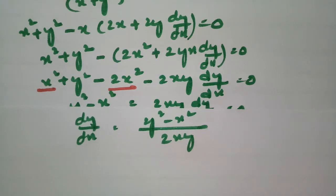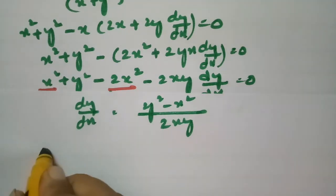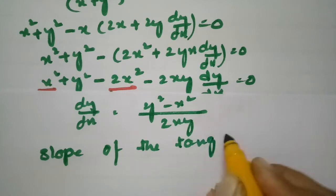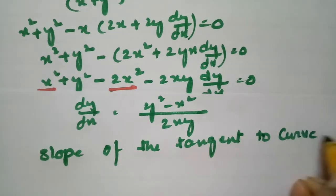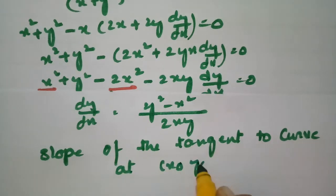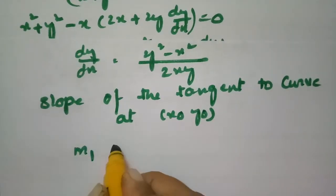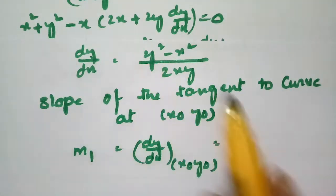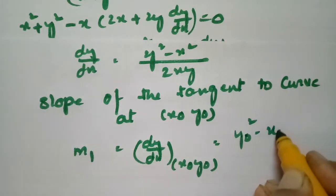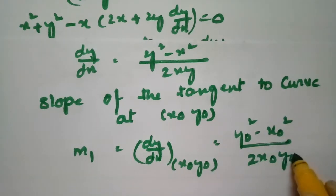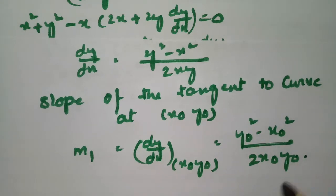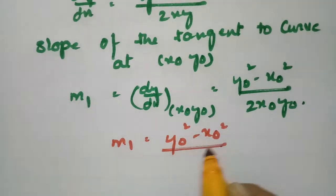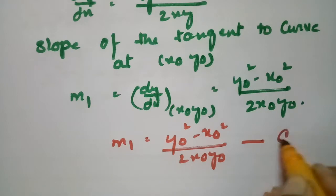The slope of the tangent to the curve u = c1 at a point (x₀, y₀) is m1 = dy/dx evaluated at (x₀, y₀), which equals (y₀² - x₀²)/(2x₀y₀). This is equation number 1.